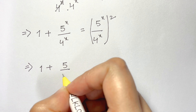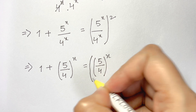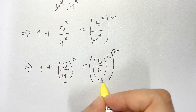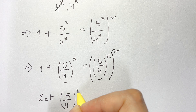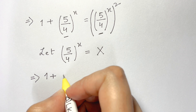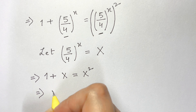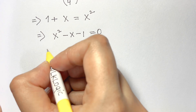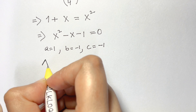We can now combine: 1 + (5/4)^x = [(5/4)^x]². Let X = (5/4)^x. Then we get 1 + X = X², which rearranges to X² − X − 1 = 0. This is the golden equation, where a = 1, b = −1, c = −1.